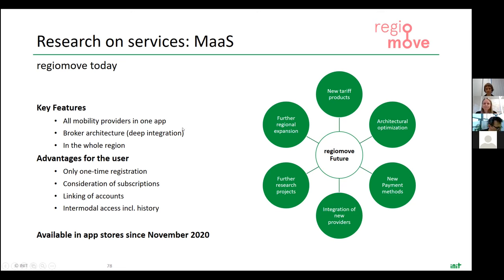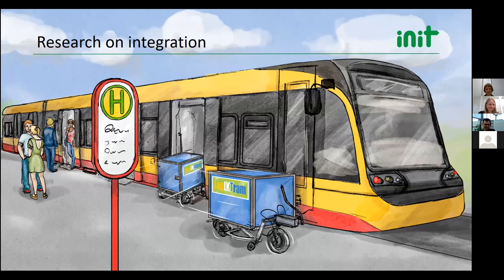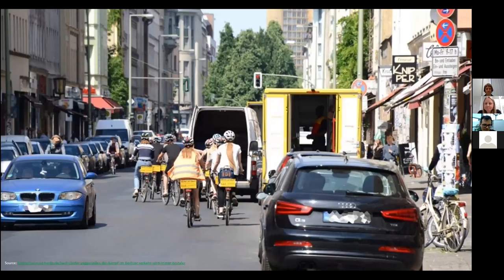The last topic is the integration of cargo and delivery services into public transport and tram services. Since COVID especially, with the Amazon hype of people buying online, there are research projects exploring how to integrate these delivery services into existing public transit infrastructure — a novel integration not yet widely implemented.